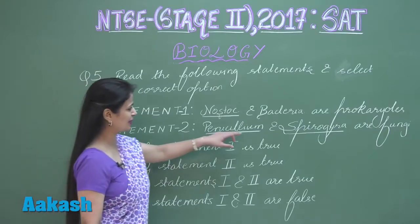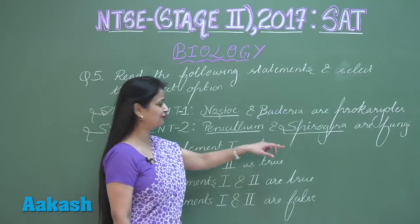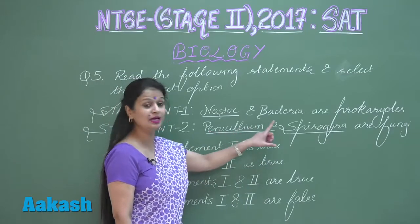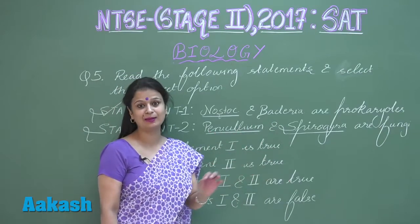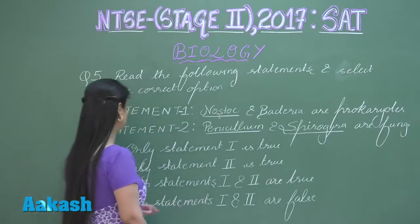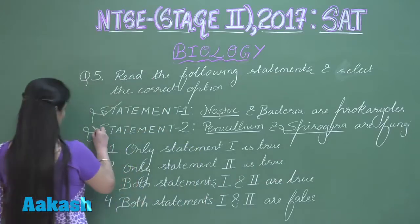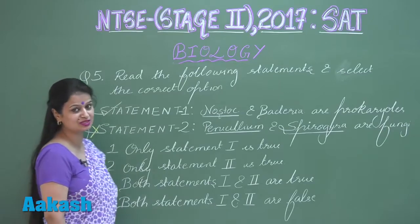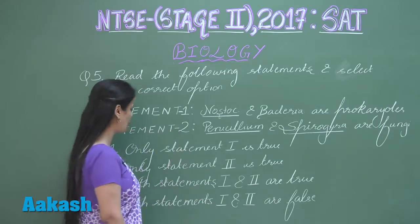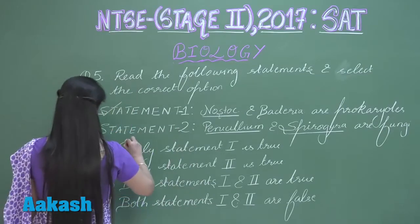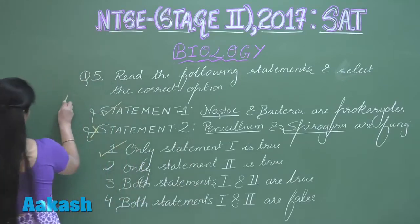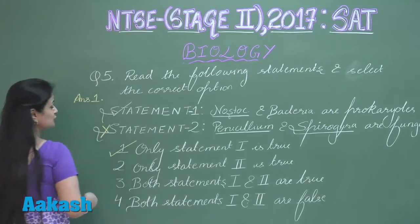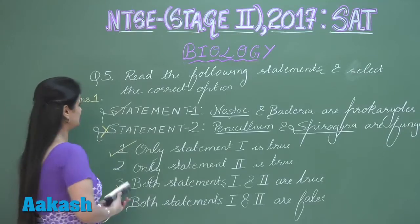Statement two: Penicillium and Spirogyra are fungi. This is wrong. Penicillium is fungi, but Spirogyra is a filamentous algae, so this is the wrong statement. Looking at the options, the only correct statement is statement number one, so the right answer for this question is option number one. Let's move on to question number six.